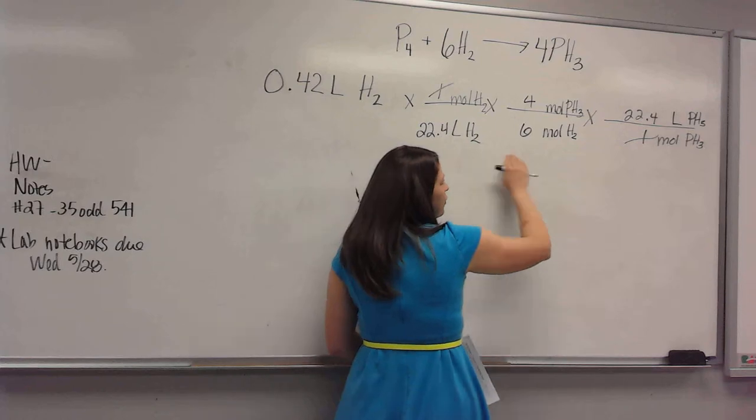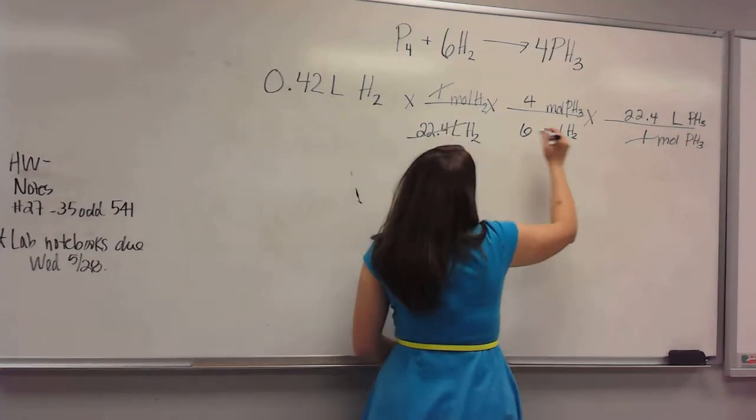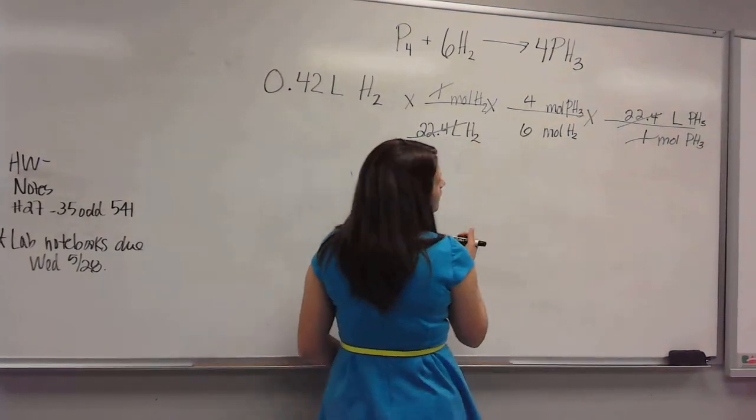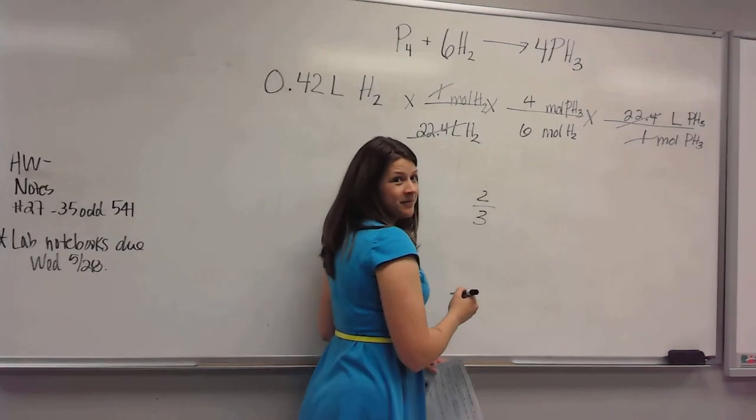If I divide by 22.4 and multiply by 22.4, that cancels out. So I really just have to multiply by 4 and divide by 6, which is the same thing as multiplying by 2 thirds. Right?